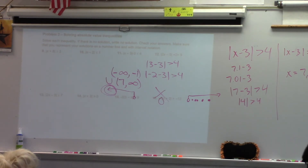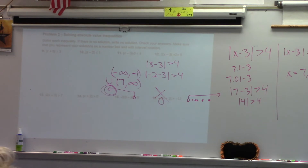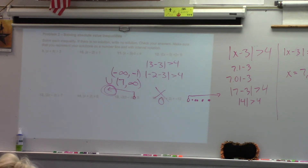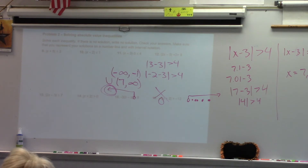Don't take it out of the absolute value yet. x plus 8 is equal to 3. x plus 8 would equal positive 3, and x plus 8 could also equal negative 3. That's going to give you your endpoints. This is part of the reason why I've gone through the equations — you can get practice with the equations on this too.